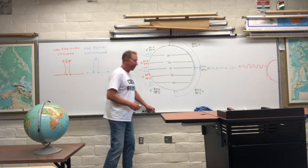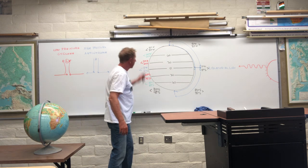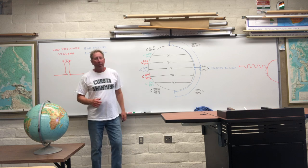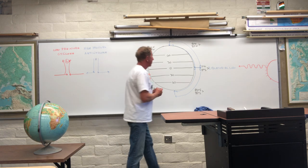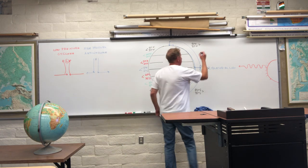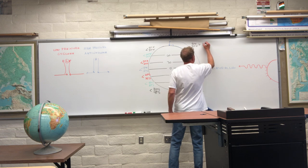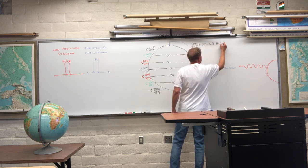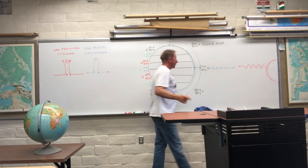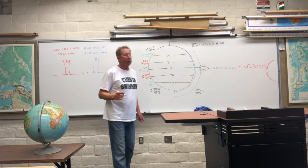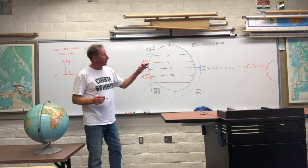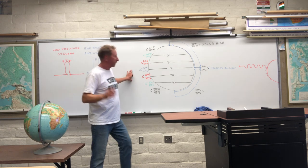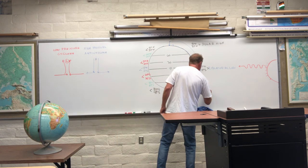Up in the polar areas, where the air is subsiding and it is diverging, that's an area of high pressure. So near both poles, there's high pressure, and this is called the polar high. On the exercise that you're doing, I would like you to write in the latitudes and name the pressure belts. We'll get to the winds here in just a second. Polar high.